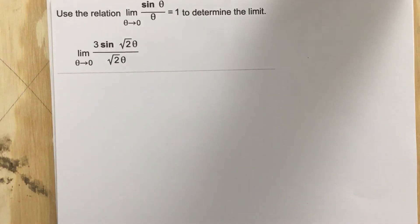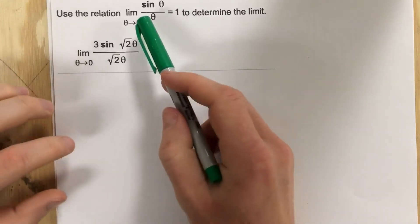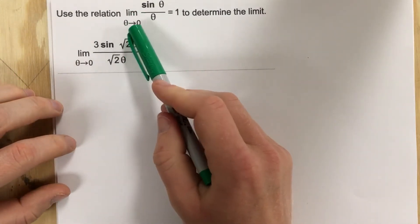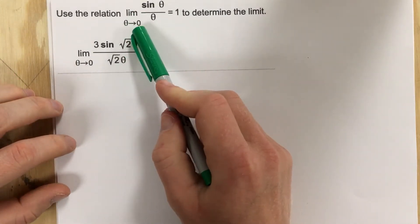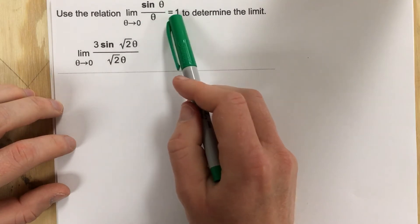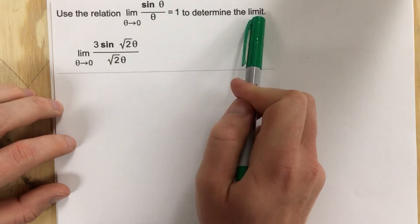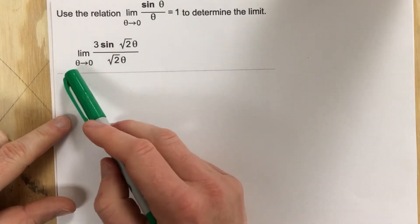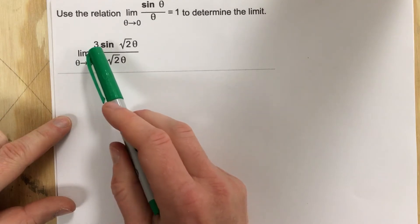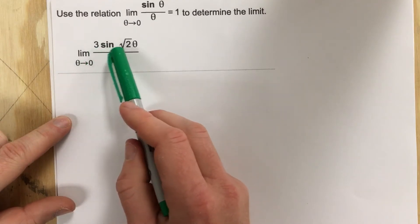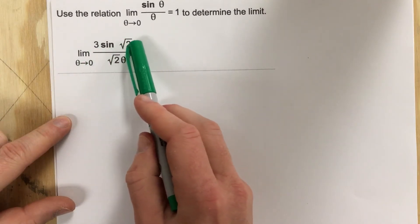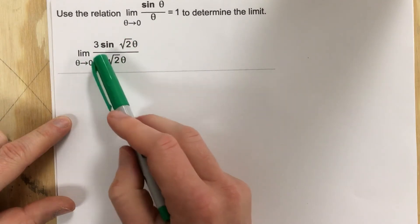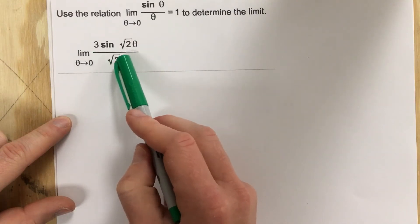This is problem number 7 from section 2.4. In this problem it says use the relation limit as theta approaches 0 of sine theta over theta equals 1 to determine the limit. They give us the limit as theta approaches 0 of 3 sine root 2 theta over root 2 theta.